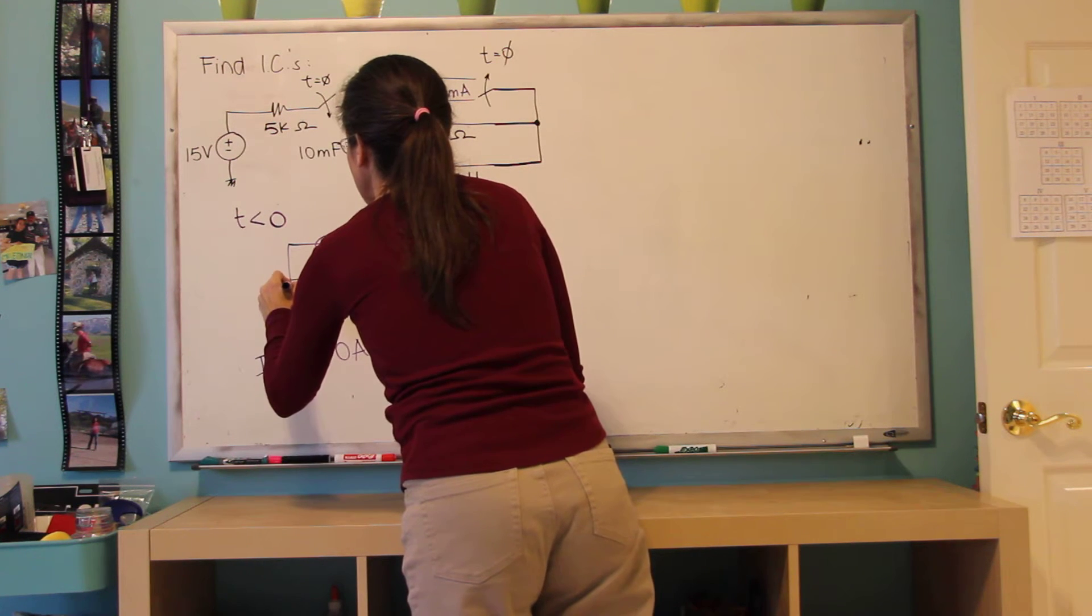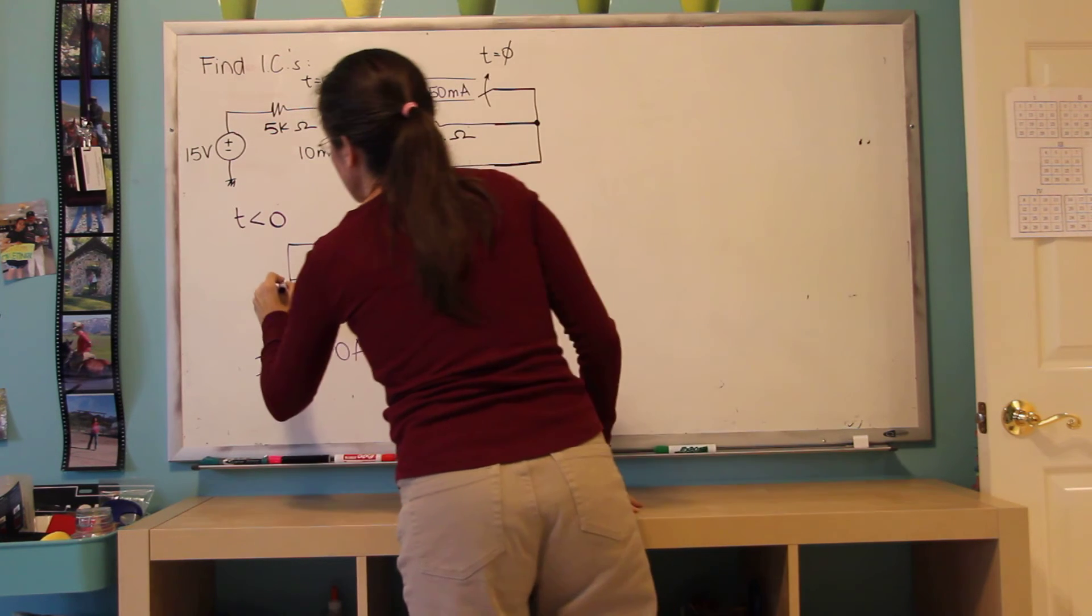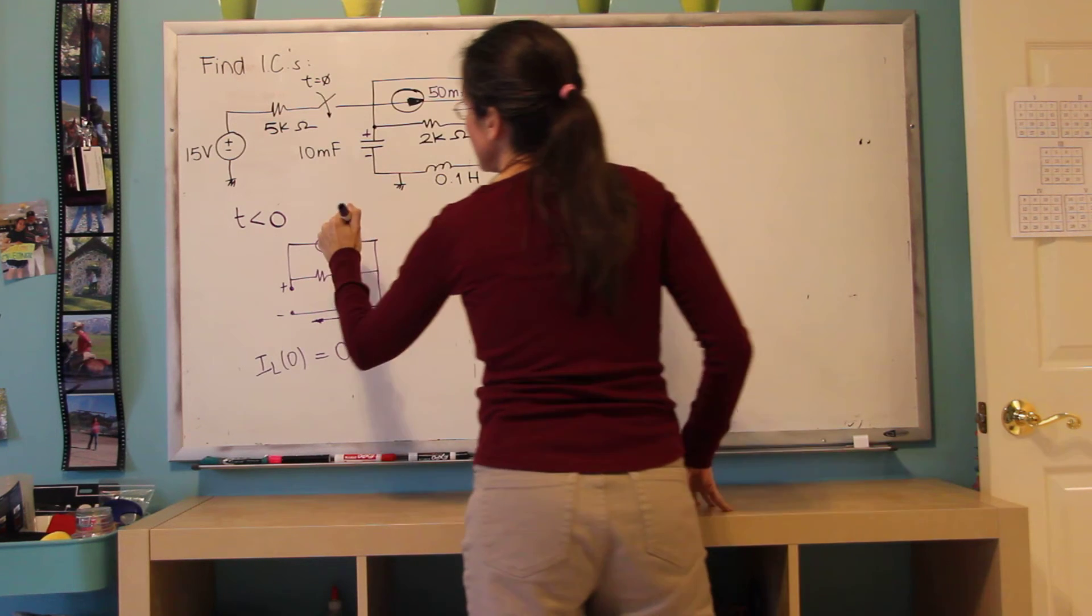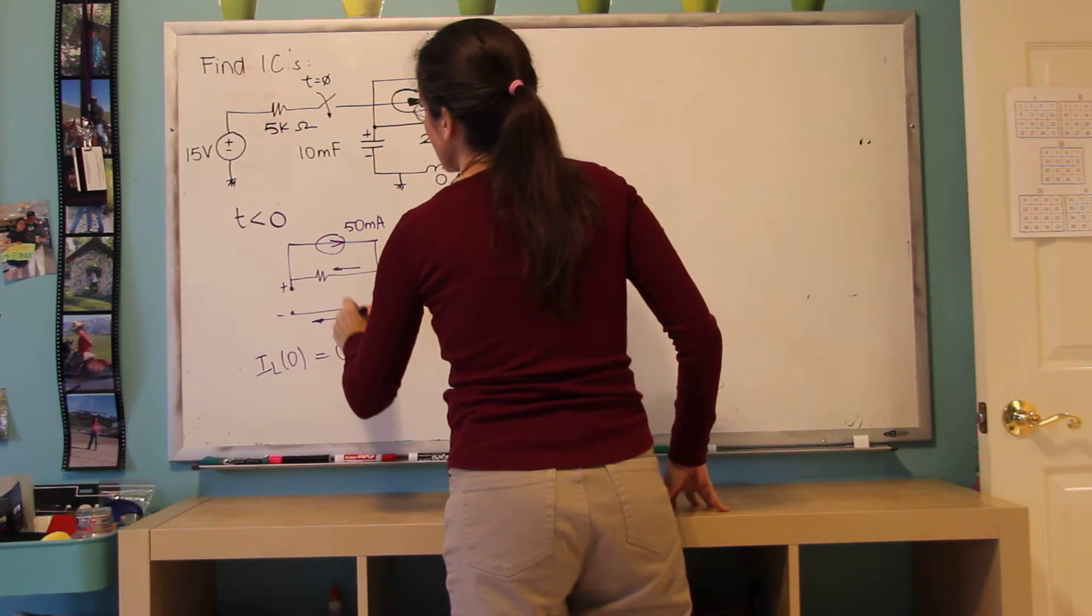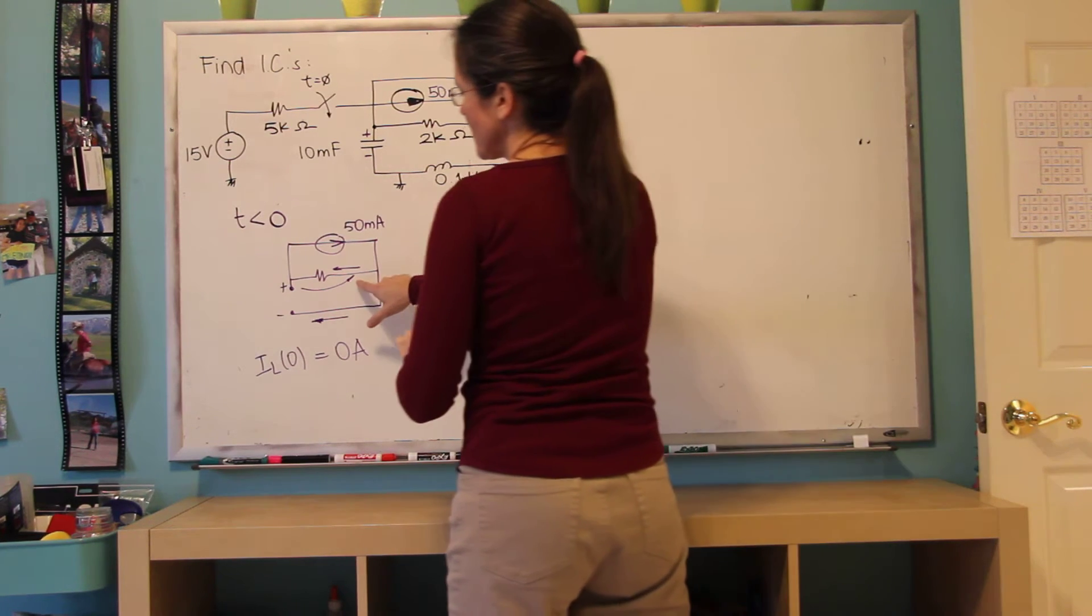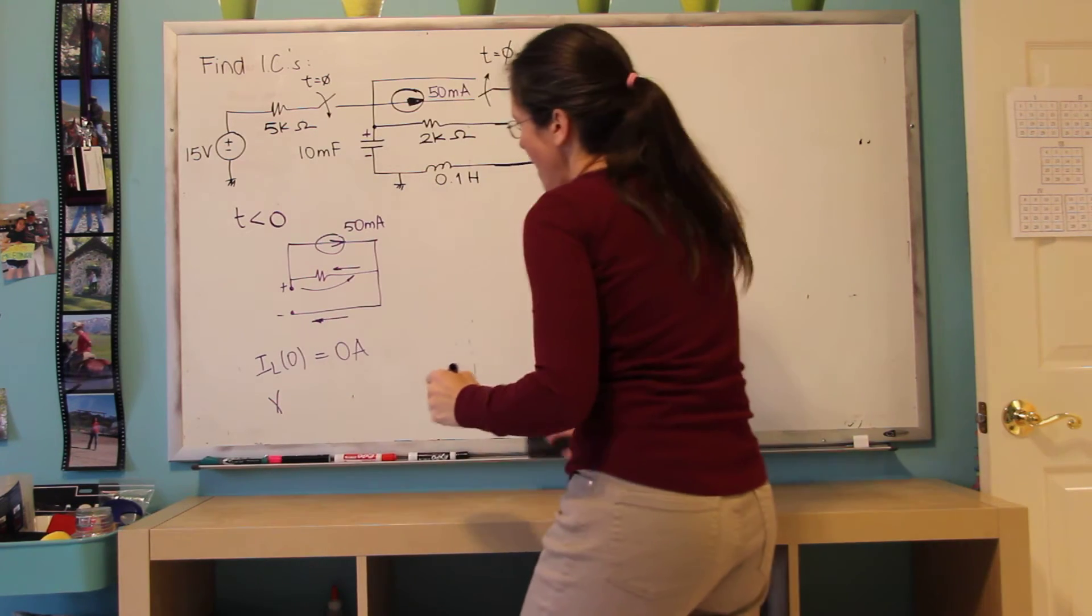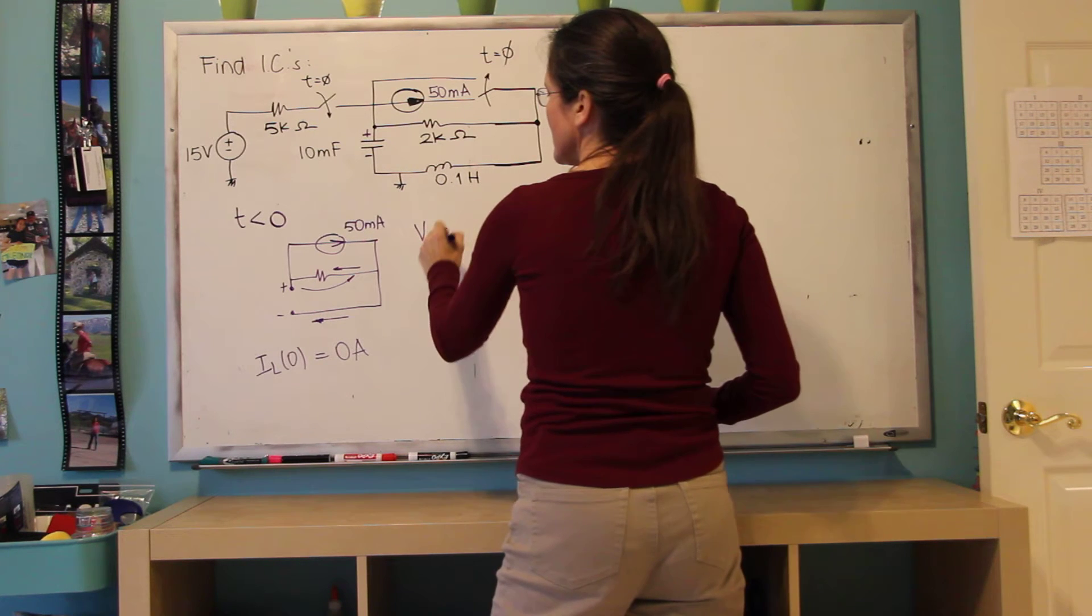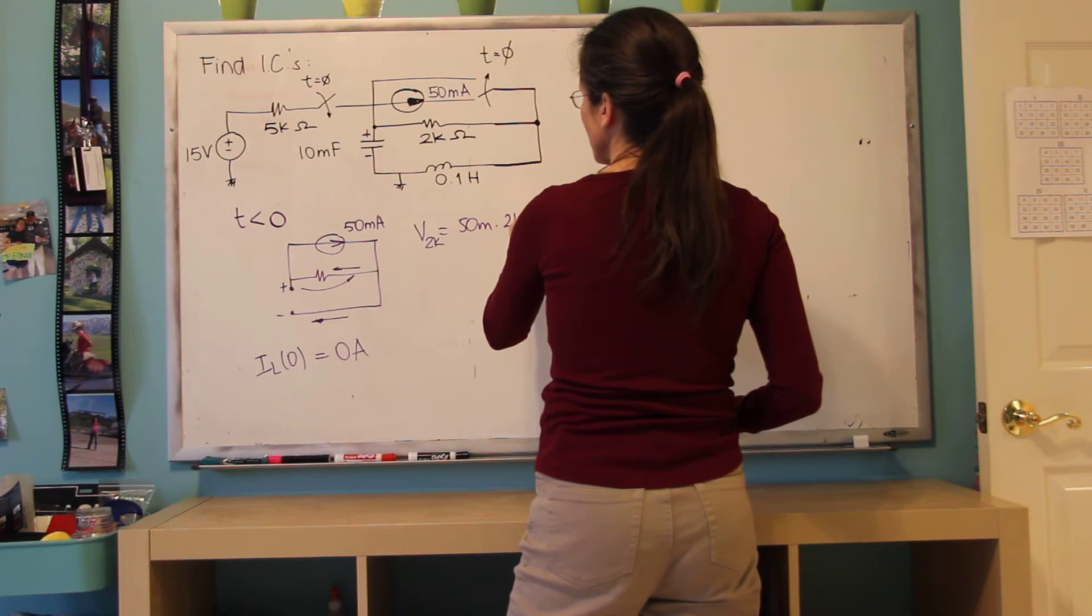And the voltage across the capacitor. I probably want to put a plus here and a minus here. But the current here is 50 milliamps. It's flowing through the 2k. So this voltage across the 2k is 50 milliamps times 2k is 100.